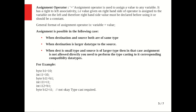The general format of the assignment operator is: variable = value, where the variable is written on the left-hand side and the value is on the right side. Assignment is possible in the following cases: when the destination and the source are both of the same type, when the destination is a larger data type than the source, and when the destination is a smaller type and the source is larger, in that case typecasting is required.